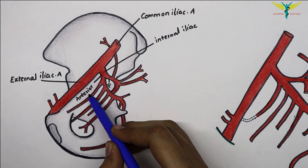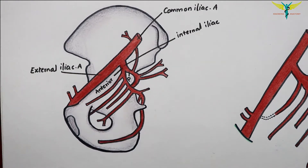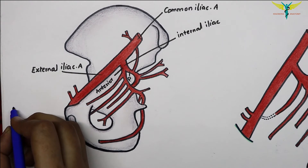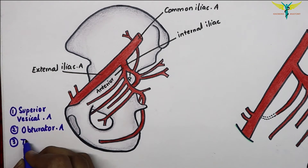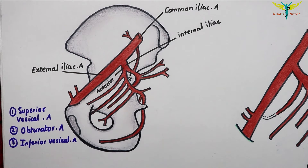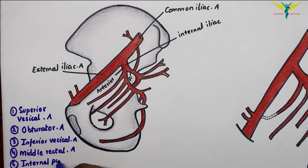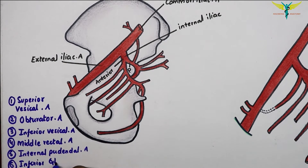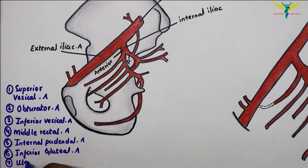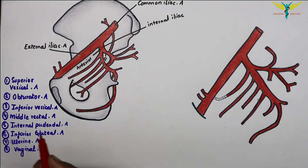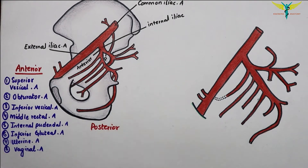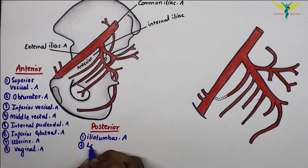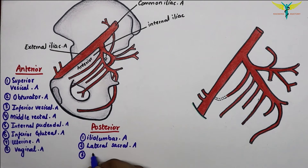The branches of the anterior division of the internal iliac artery are: the superior vesicle artery, obturator artery, inferior vesicle artery, middle rectal artery, internal pudendal artery, inferior gluteal artery, uterine artery, and the vaginal artery. The branches of the posterior division are the iliolumbar artery, lateral sacral arteries, and the superior gluteal artery.